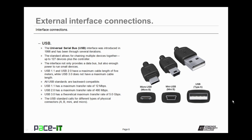All USB standards are backwards compatible. USB 1.1 has a maximum transfer rate of 12 megabits per second. USB 2.0 was a vast improvement at 480 megabits per second. USB 3.0 has a theoretical maximum transfer rate of 5 gigabits per second. For USB 1.1 and 2.0, connectors are broken out into A and B connectors, each with mini and micro versions. USB 3.0 has its own connector standard and is usually colored blue so you know it's USB 3.0.